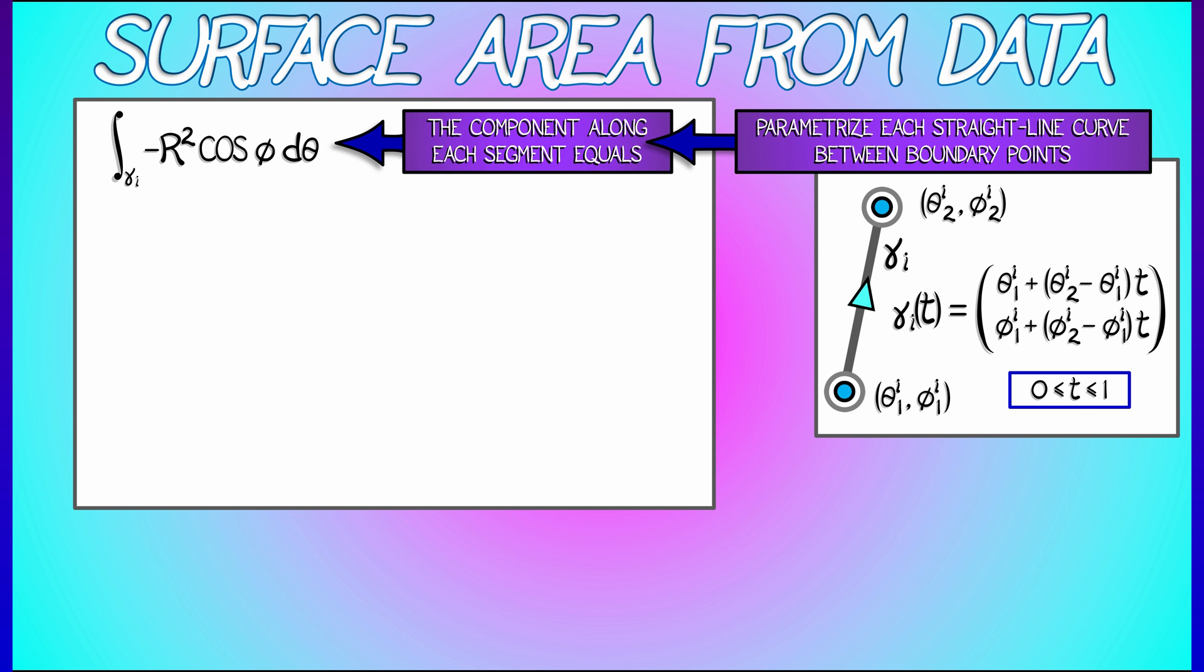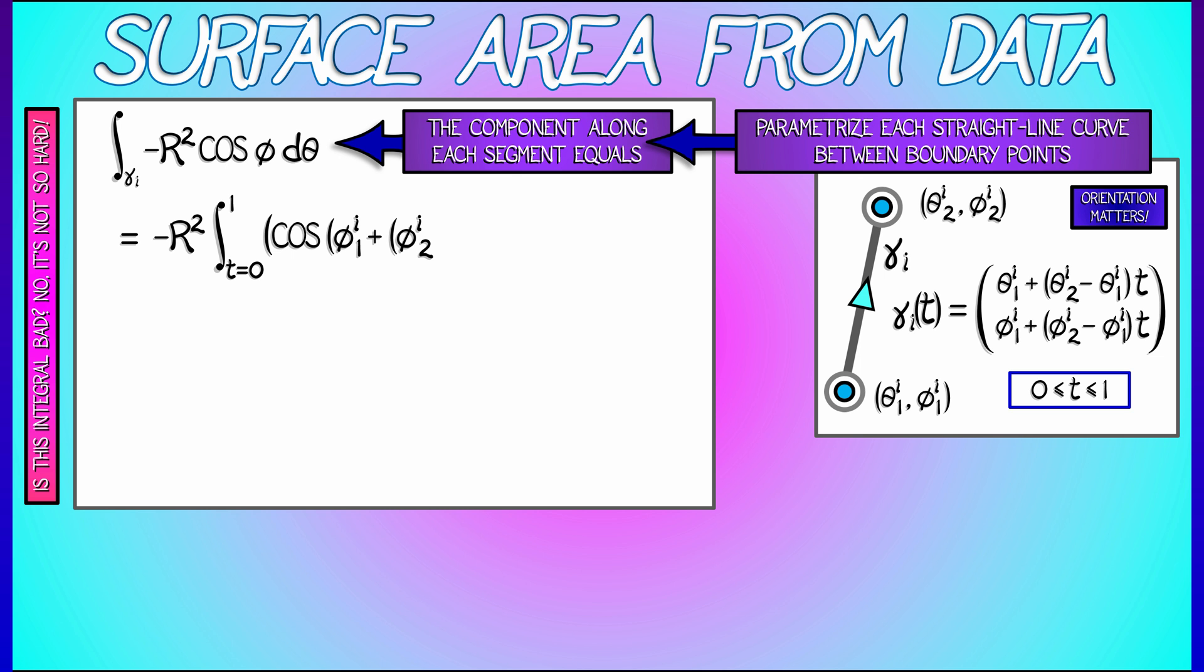Now what we're going to do is plug these values into that one-form, so cosine of φ becomes cosine of quantity φ₁ᵢ plus quantity φ₂ᵢ minus φ₁ᵢ times t. Then for dθ, we get θ₂ᵢ minus θ₁ᵢ times dt. I can pull the minus R² out from that integral, going from 0 to 1. I can also pull out the θ₂ minus θ₁ term, because that's just a constant.